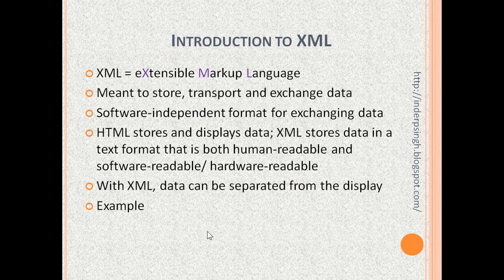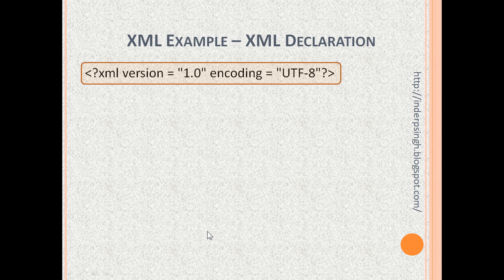With this introduction, let us see an example. The example we are going to see is an XML document that stores emails. First of all, we have to put the XML declaration in our document, also called the Prologue. It starts with an angle bracket and question mark, and we give the XML version. Version 1.0 is the more popular version, and we can also specify the encoding to support international characters.